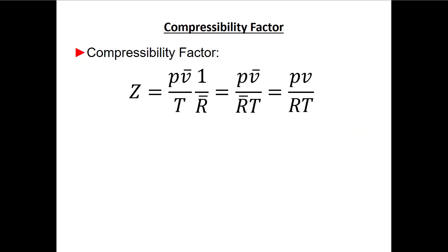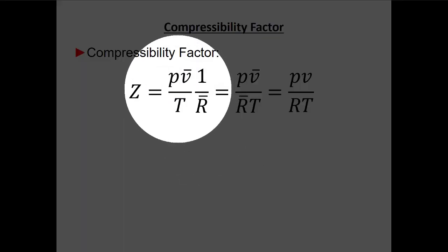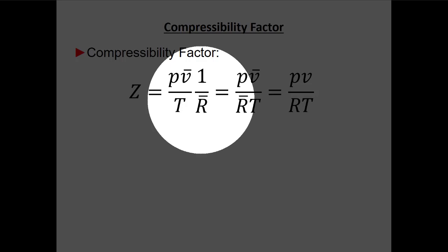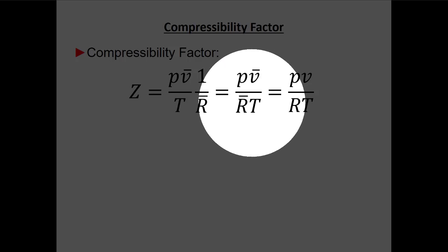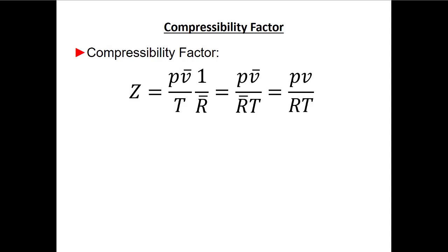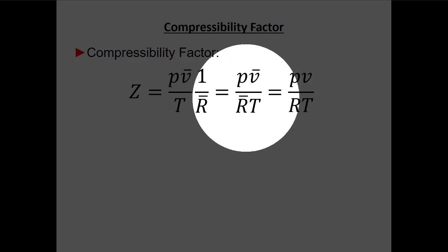This idea lets us define the compressibility factor, which we'll call capital Z. If we take P·v̄ divided by R̄·T, all of these lines — no matter what gas, no matter what temperature — will always intersect at Z equals one. My brother, as a biochemist, defines things by moles. As mechanical engineers we define by mass, and it turns out this equation ends up the same once we define our specific units.